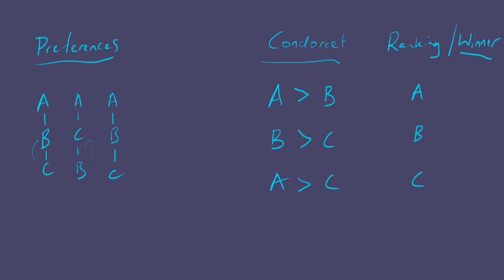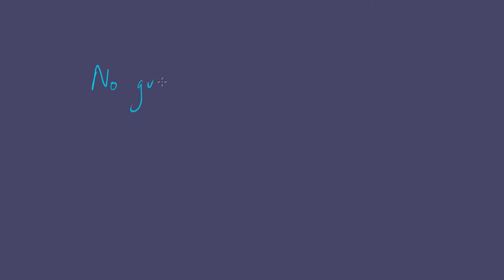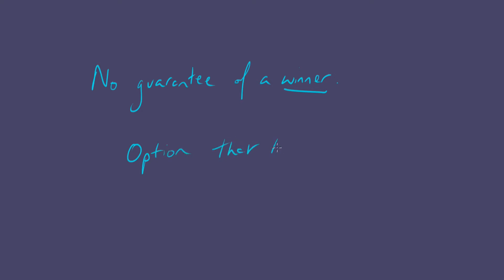The problem is you cannot be guaranteed of having a winner. A winner is an option that beats all others — when you look at the individual pairs, it has to win every pairing in which it's involved.